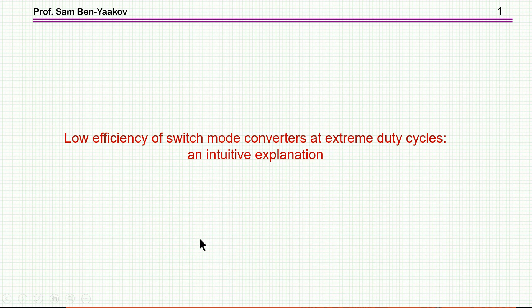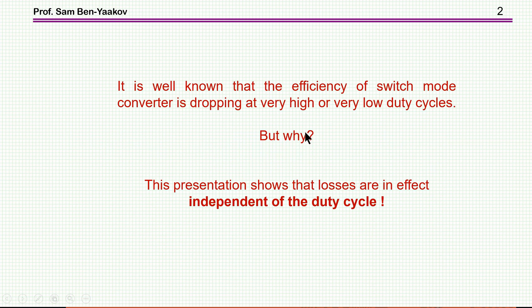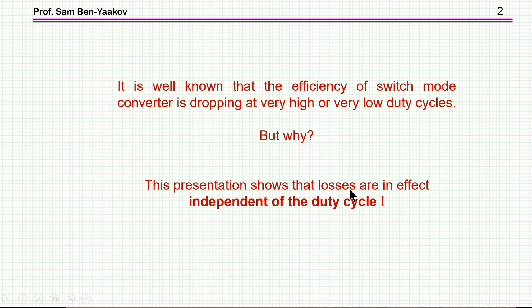Hi, I'm Sabin Yaakov. This presentation is entitled 'Low Efficiency of Switch Mode Converters at Extreme Duty Cycle: An Intuitive Explanation.' It is very well known that the efficiency of switch mode converters drops at very high or very low duty cycle depending on the topology. The question is why? In this presentation I'm not going to do any calculation of currents and voltages and overlapping, but really look at the general picture in an intuitive way to explain this effect of duty cycle on efficiency. I will show that the losses are in fact independent of the duty cycle — that is, the losses are not dependent on duty cycle, but the efficiency is.